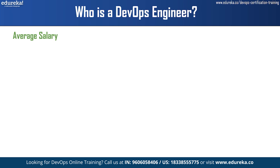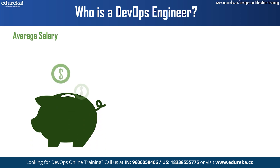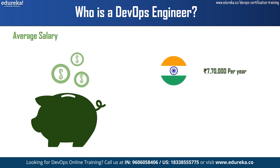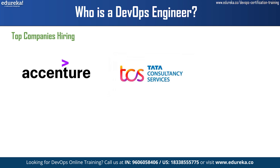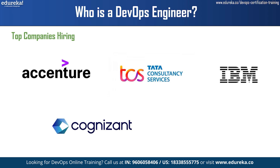Next, I am going to discuss the salary details. According to the latest Glassdoor report, the average salary for DevOps engineers is Rs. 7,70,000 per year in India. The average salary for DevOps engineers is around $108,000 per year in the United States. Accenture, TCS, IBM, Cognizant and Capgemini are the top companies hiring for DevOps engineer roles according to Glassdoor.